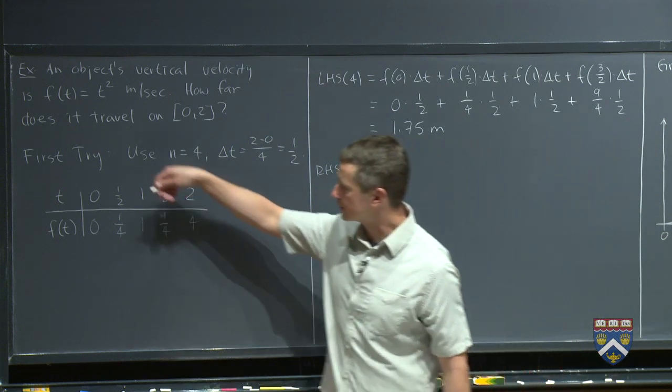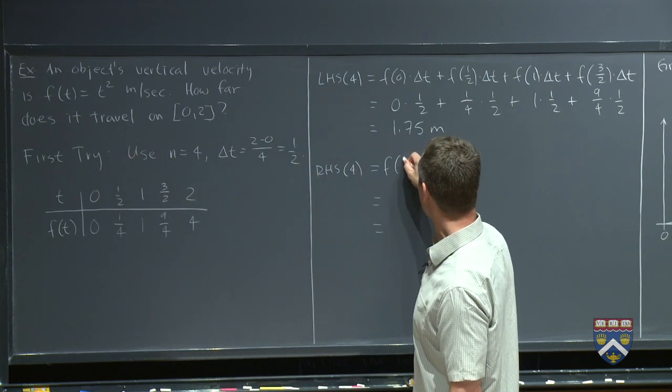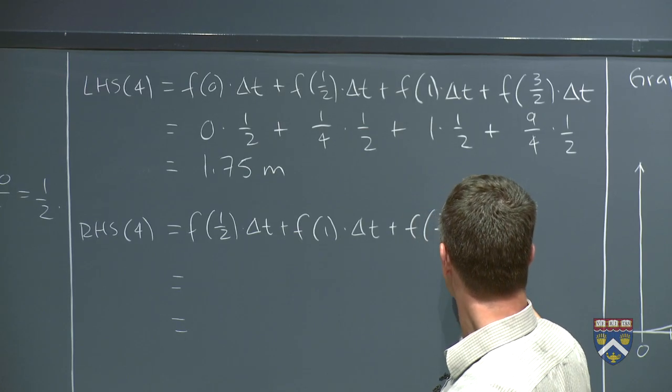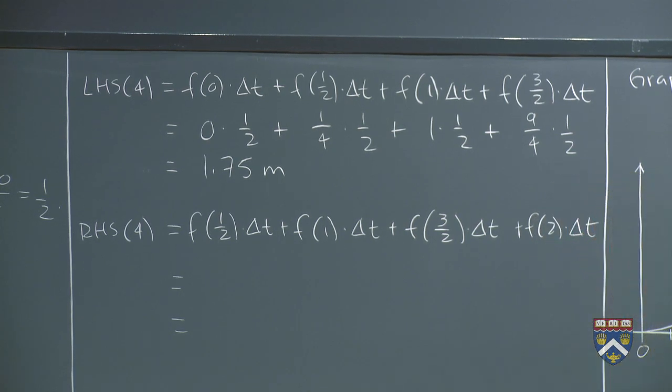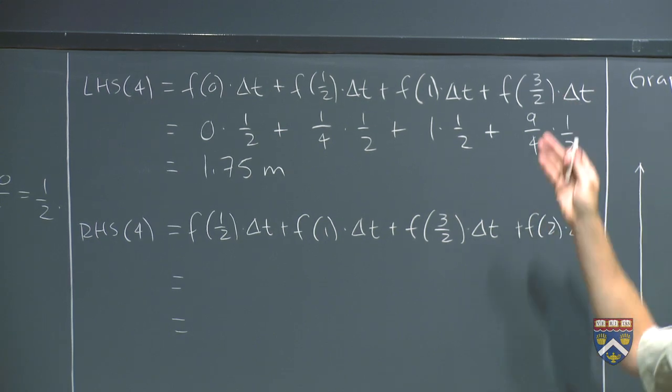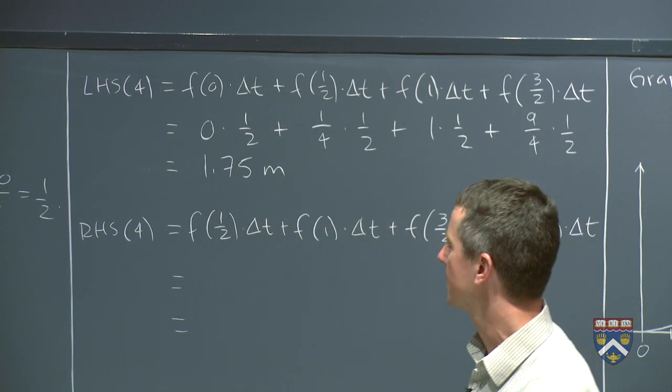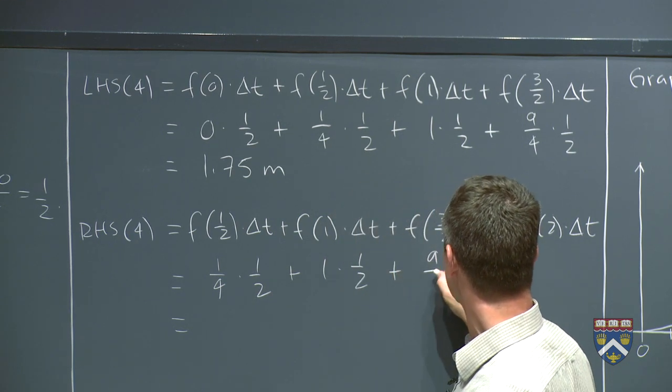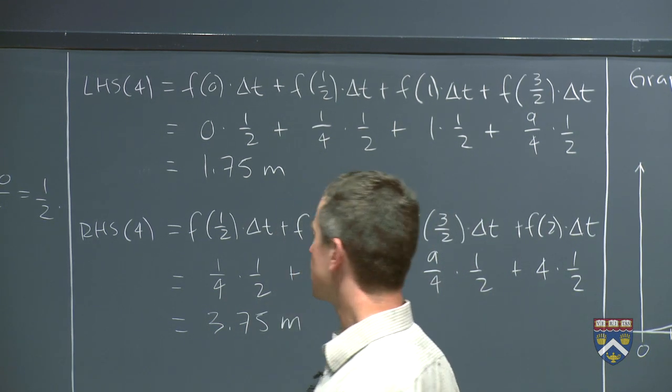Let's try the right-hand sum. The right-hand sum, in our first interval, where we have the choice between the value at zero or the value at one half, since it's the right-hand sum, we pick the value at one half. So there we're starting with f of one half, delta t, and then we just go from there: f of one, f of three halves, and we end with f of two. So let's note one more time, because we're going to use this later, that the first term in the left-hand sum is the only one that doesn't appear in the right-hand sum. The last term in the right-hand sum is the only one that doesn't appear in the left-hand sum. So now let's fill in the values here. f of a half is a quarter, delta t is still a half, f of one is one, f of three halves is nine quarters, f of two is four. You add those all up, you get 3.75 meters.